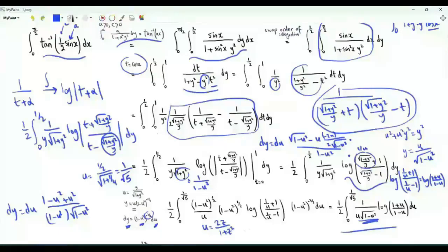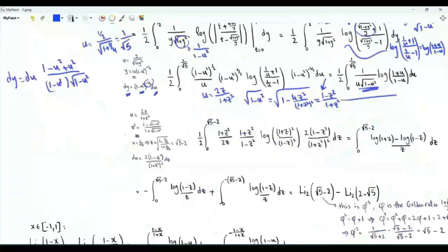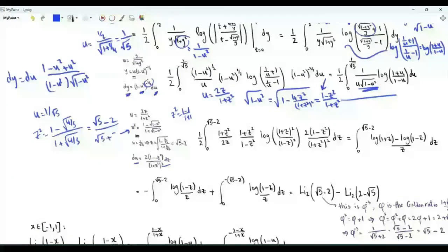We do another substitution: u = 2z/(1 + z²). Then √(1 − u²) = √(1 − 4z²/(1+z²)²) = (1 − z²)/(1 + z²) for positive z < 1. We can use this to write z² = (1 − √(1−u²))/(1 + √(1−u²)). When u = 0, z = 0. When u = 1/√5, z² = (1 − √(4/5))/(1 + √(4/5)) = (√5 − 2)/(√5 + 2). Multiplying numerator and denominator by √5 − 2 gives z = √5 − 2 when u = 1/√5.